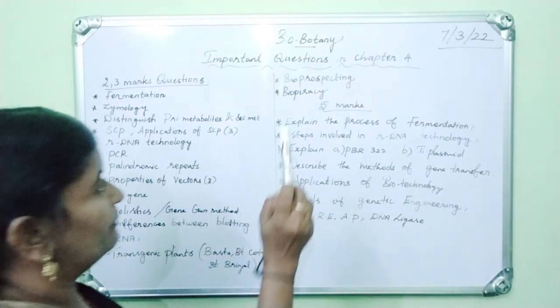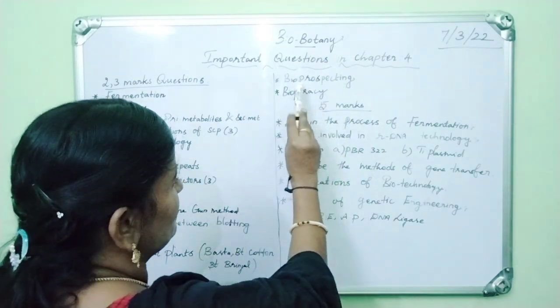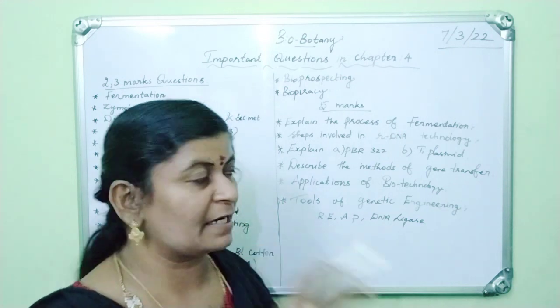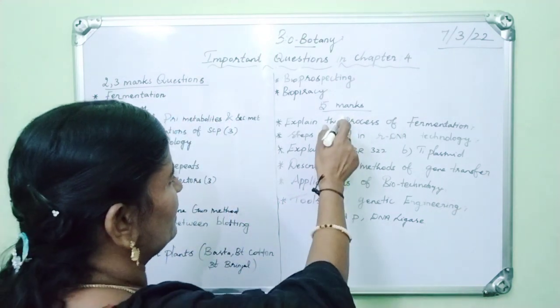Then BT brinjal. Then biopiracy. These questions may be asked as three mark questions. Then five marks.